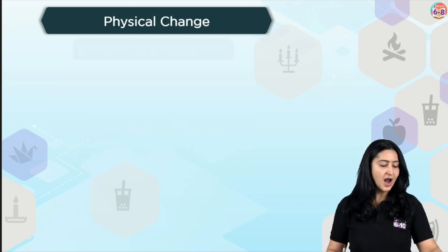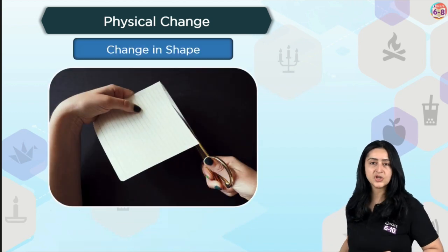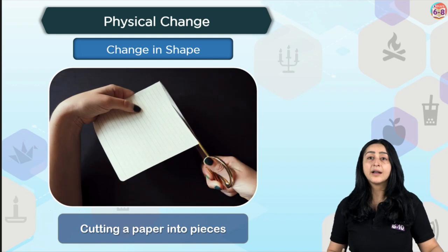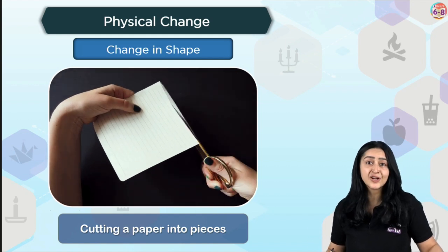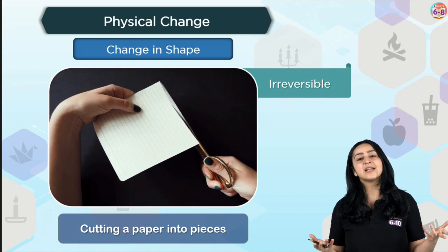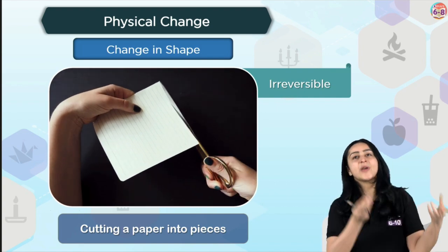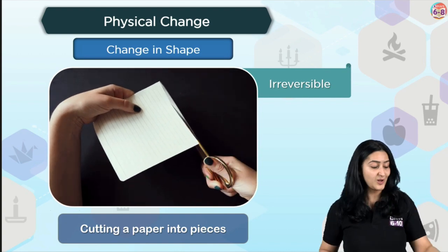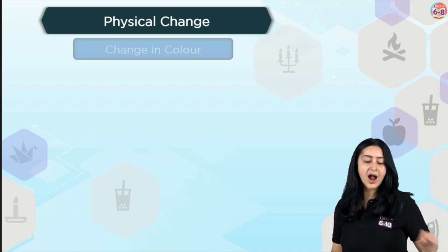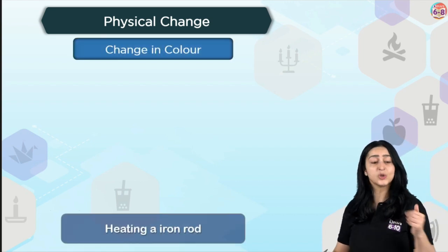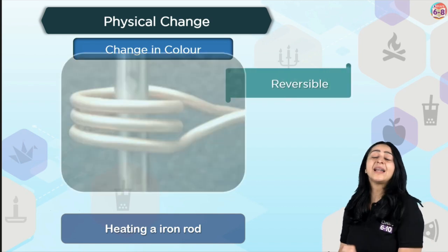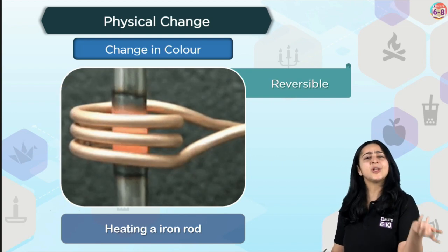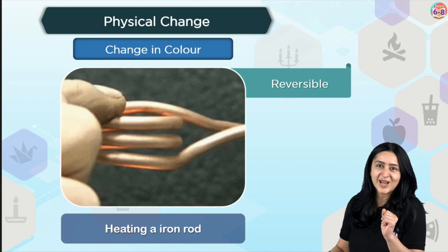Next, change in shape. Cutting paper into pieces — that is an irreversible change. But if you fold it into a boat shape, you can get back that original shape, so that is reversible. A physical change can be reversible or irreversible. Then change in color: when you heat a metal rod, it becomes a different color, but when it cools down, the color changes back. So this is a reversible change.